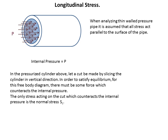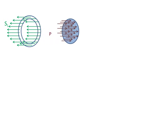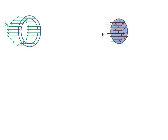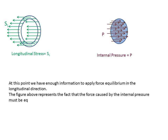We have internal pressure P for the pressurized fluid within the pipe. To counteract this pressure P, we have a normal stress SL to keep the system in equilibrium. So we have longitudinal stress SL along the thickness of the pipe. P acts over the flow area of the pipe, whereas SL — the longitudinal stress — is developed along the thickness of the pipe. We now have enough information to apply force equilibrium in the longitudinal direction: the force caused by internal pressure must be equilibrated by the force caused by the longitudinal normal stress.